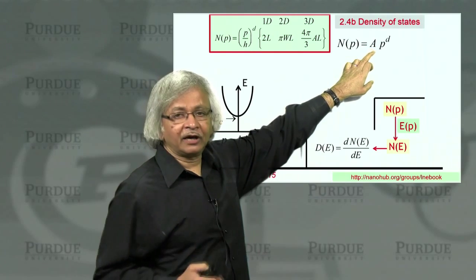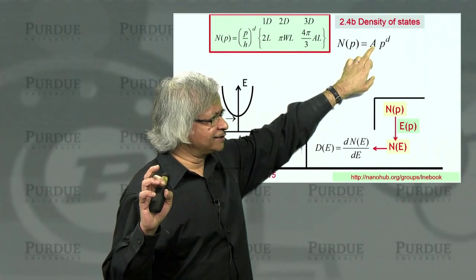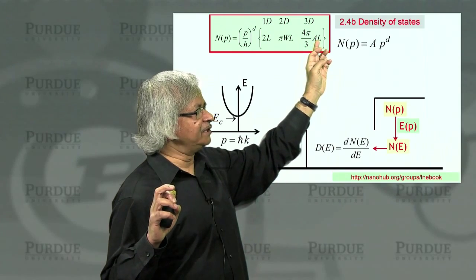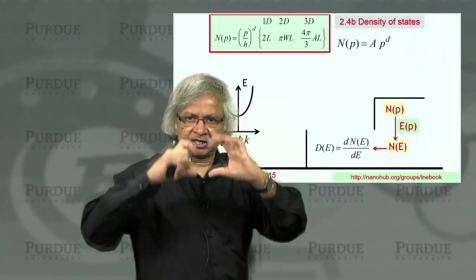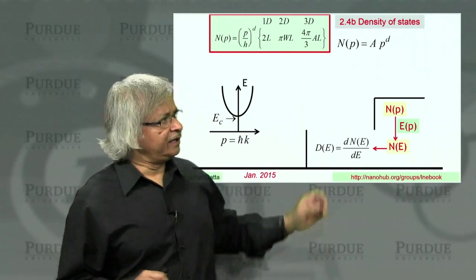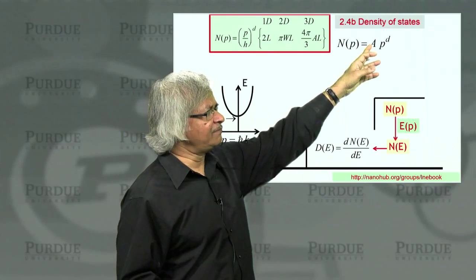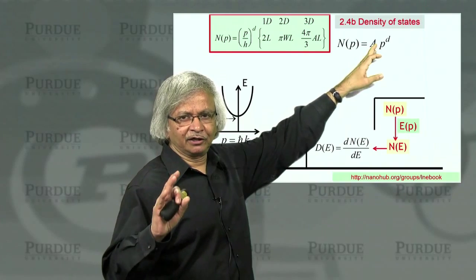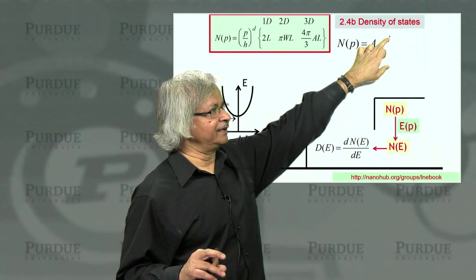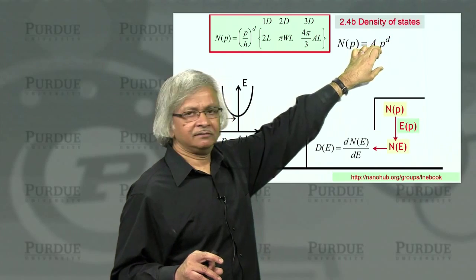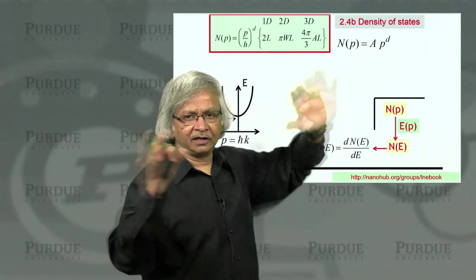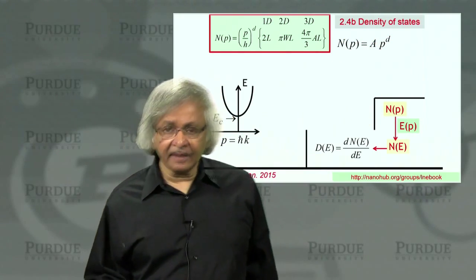There's a constant in front, which I wrote as a. When I look at it, I realize that's an unfortunate choice because I had earlier been using a to represent the cross-sectional area. I should have given it a different name. What I mean is it's some unimportant constant, because the most important thing is how it varies with p.